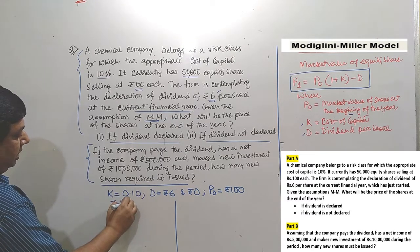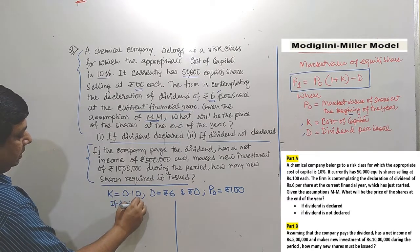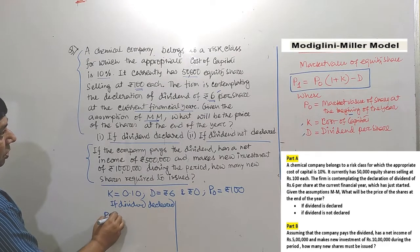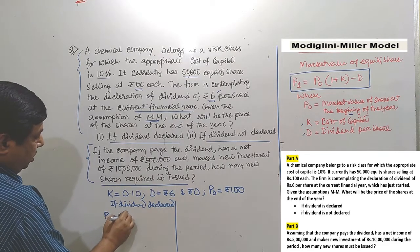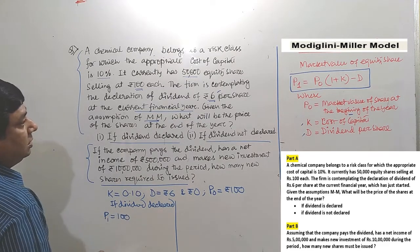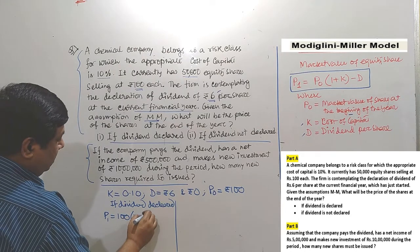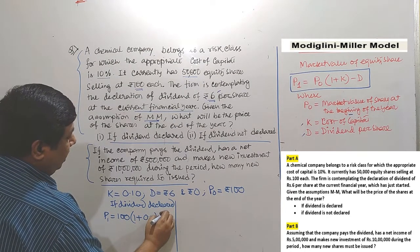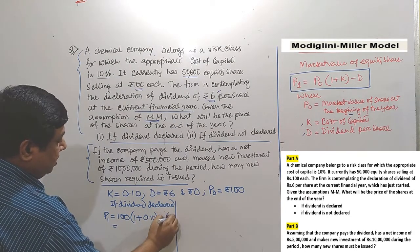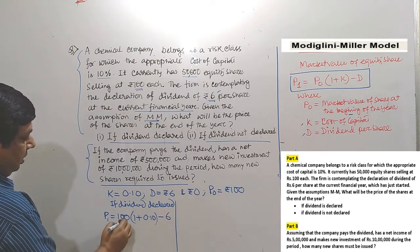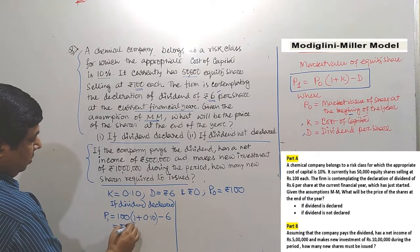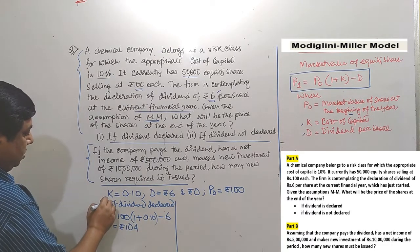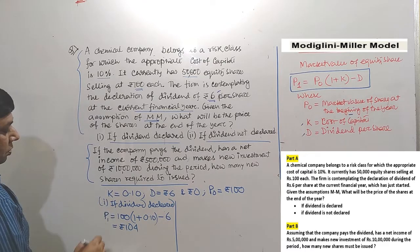If dividend is declared: P1 equals P0, that is 100, multiplied by (1 plus K, which is 0.10), minus D, which is 6. That gives us 100 × 1.10 = 110, then 110 minus 6, giving us Rs.104.